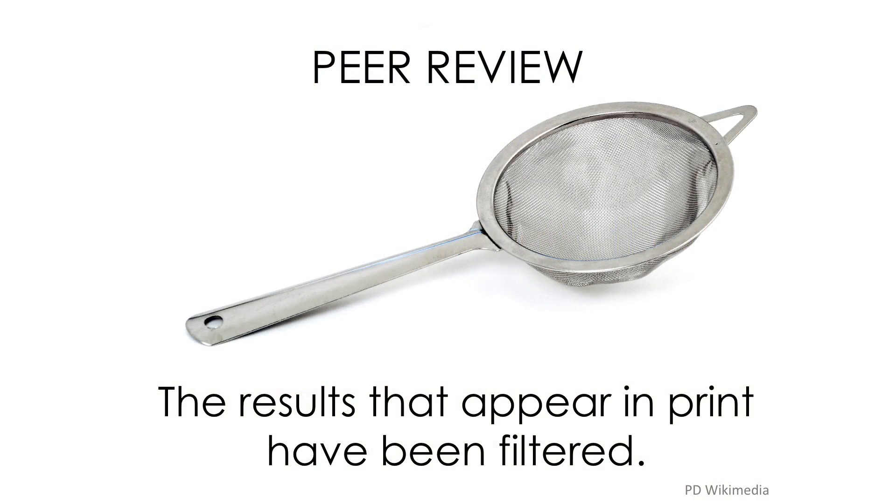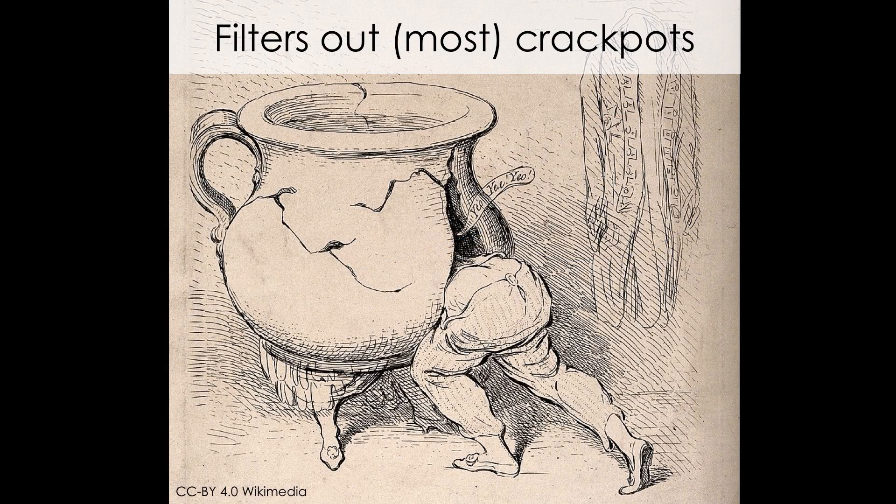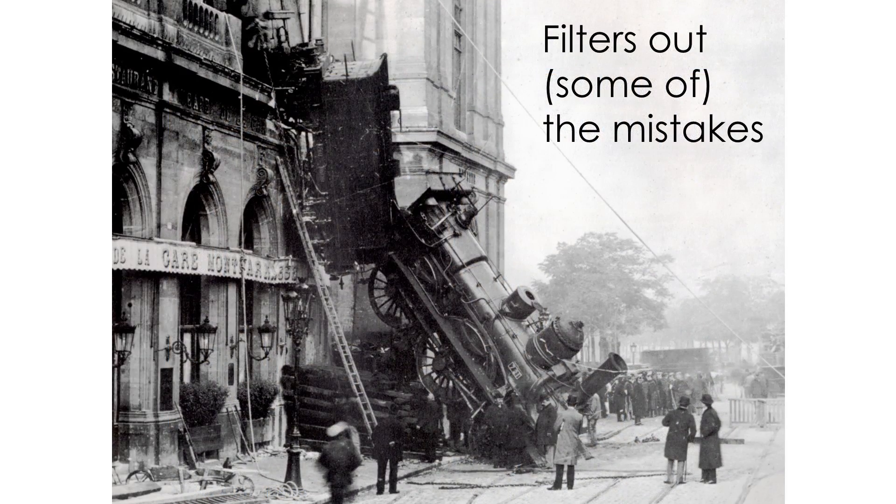And a lot of this is because of peer review. So peer review is very useful for a large number of reasons. The idea is that before papers appear in scientific journals, they go through this process of review by other scientists. It's a filter on what's out there. And the filter is useful. It filters out the crackpots, by and large. It filters out some of the mistakes that get made in papers. Some of the statistical mistakes get caught. Some of the mistakes in experimental design or reasoning or mathematics get caught.